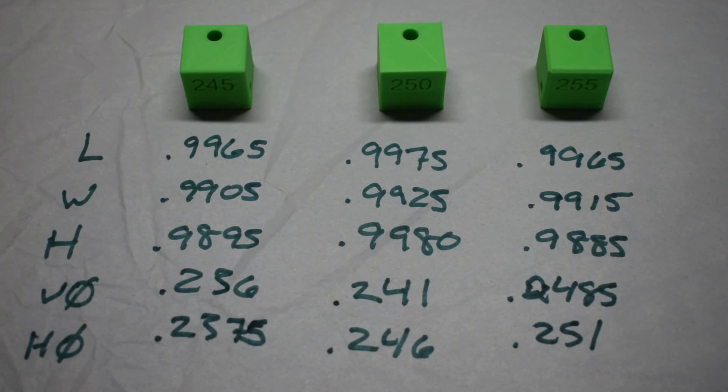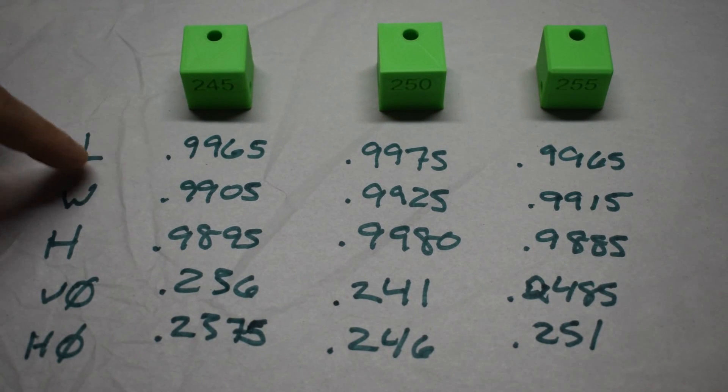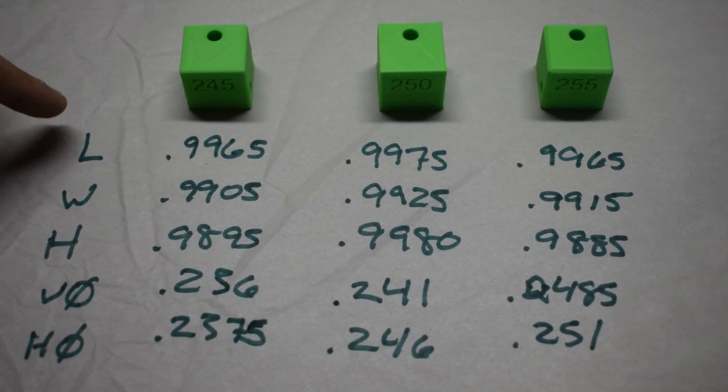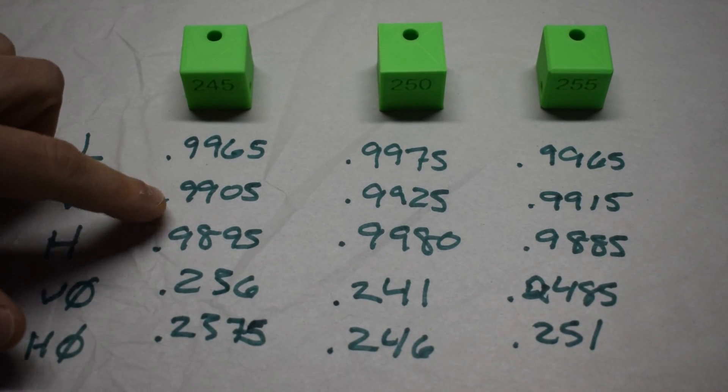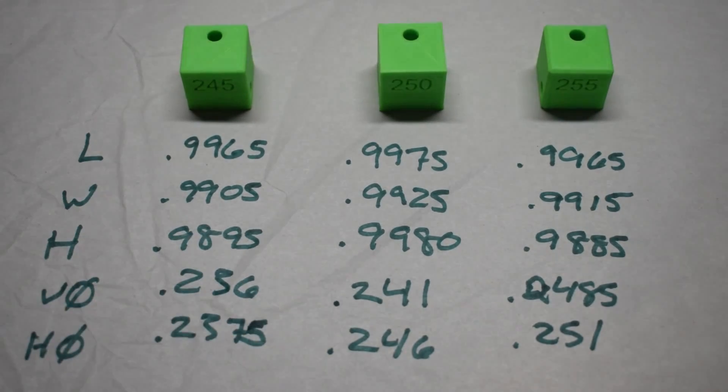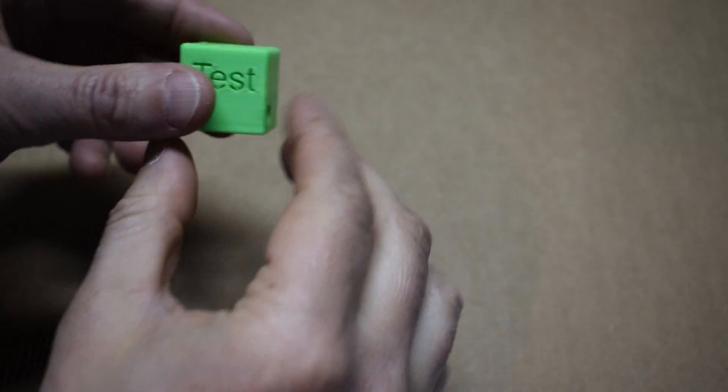If we look at all those variations in print dimensions, we could take an average across them and try to design a perfect part. So I did exactly that. I took the average of the length, width, and height and applied that to my 3D model, as well as changed the diameter to try and dial in that one inch by one inch by one inch cube with a 0.250 hole. So let's see how we did.